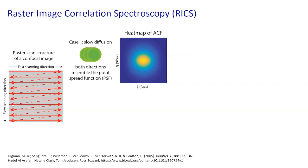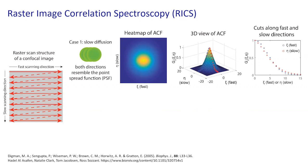In the case of slow diffusion, the autocorrelation function looks like the point spread function in both the fast and slow scanning directions. As a two-dimensional heat map or three-dimensional view, the contour is circular. Cuts of the 3D ACF in the fast and slow directions look almost the same, because as far as an immobile molecule is concerned, it doesn't matter which direction you're scanning.